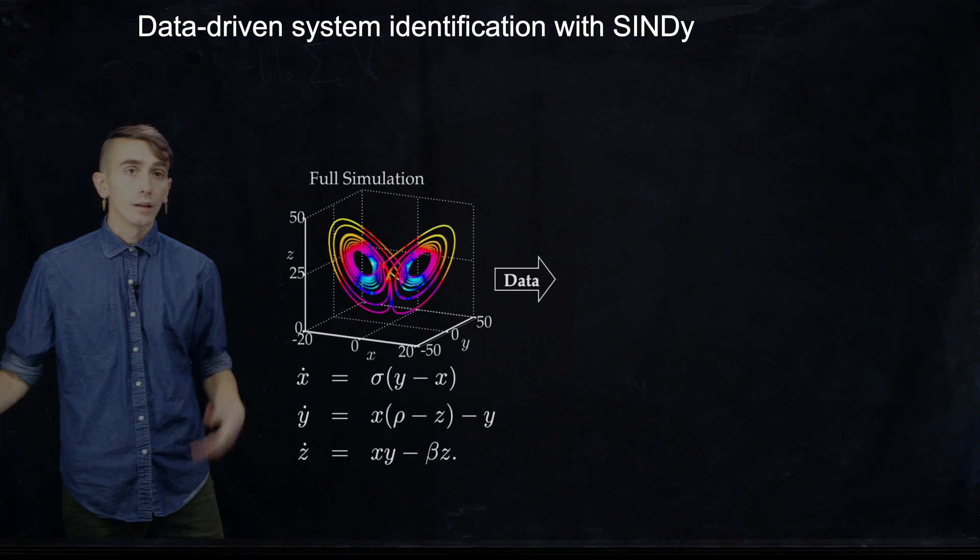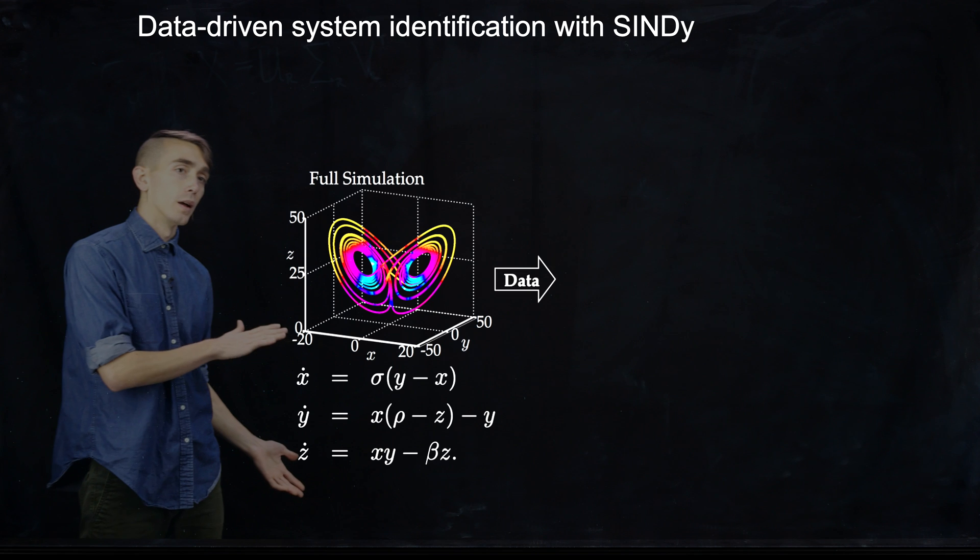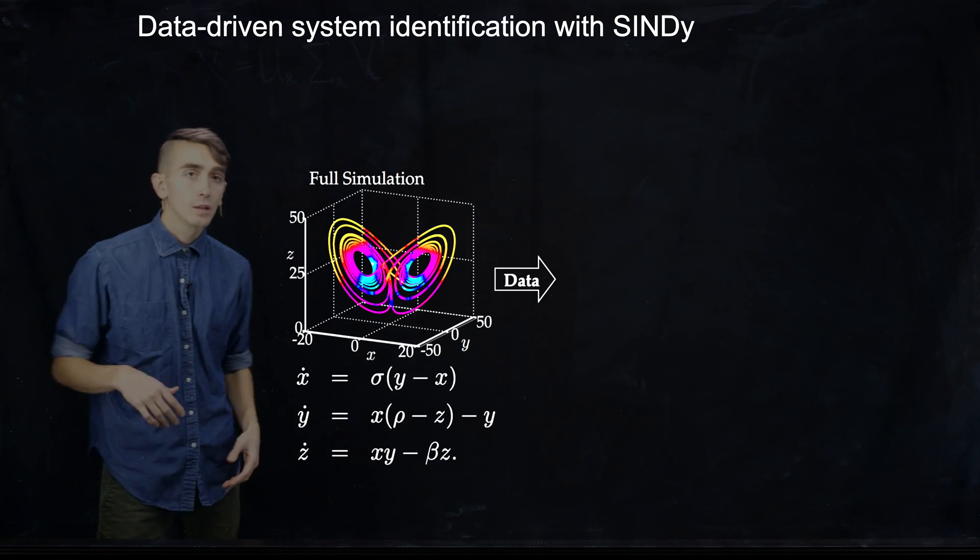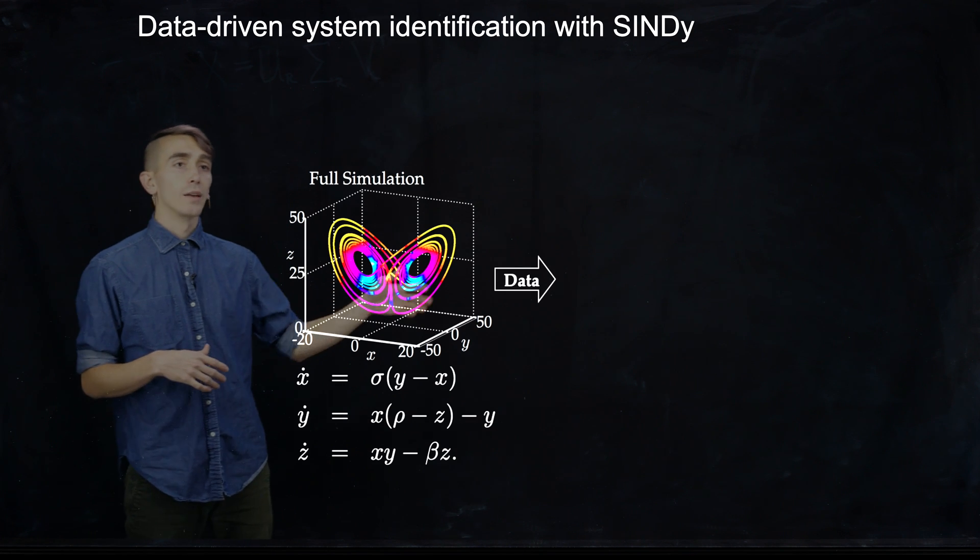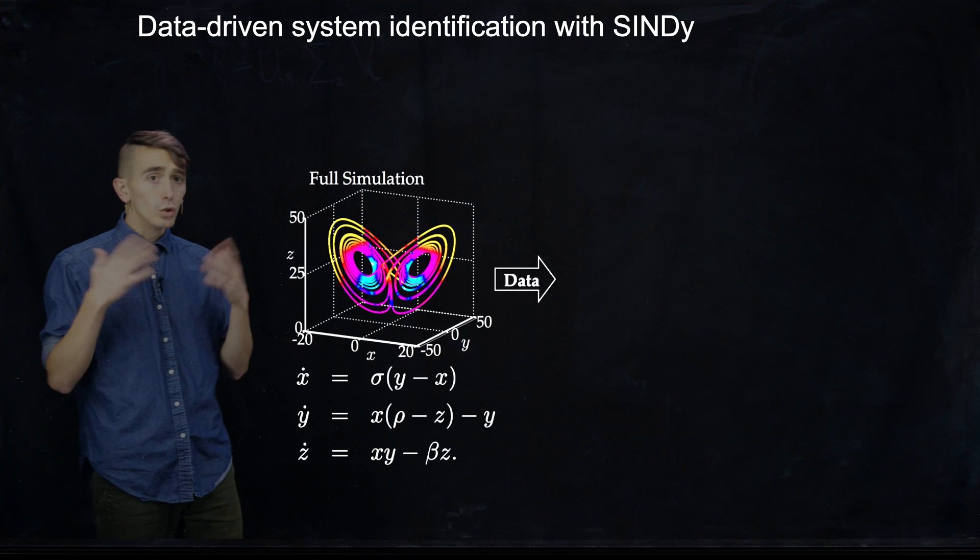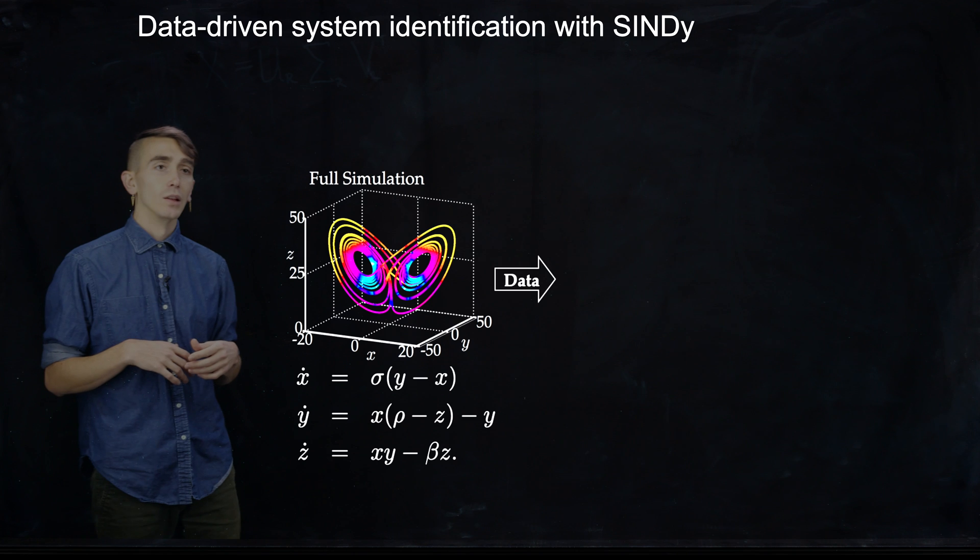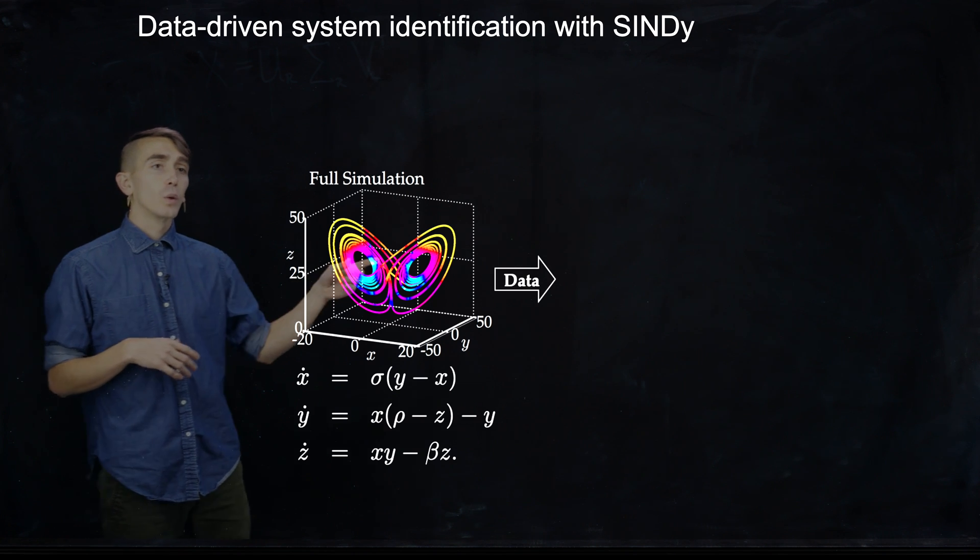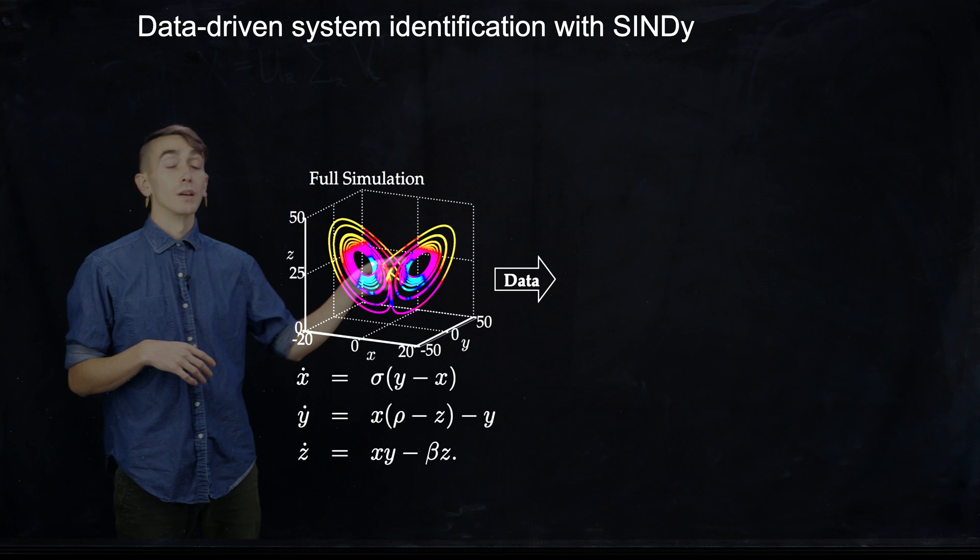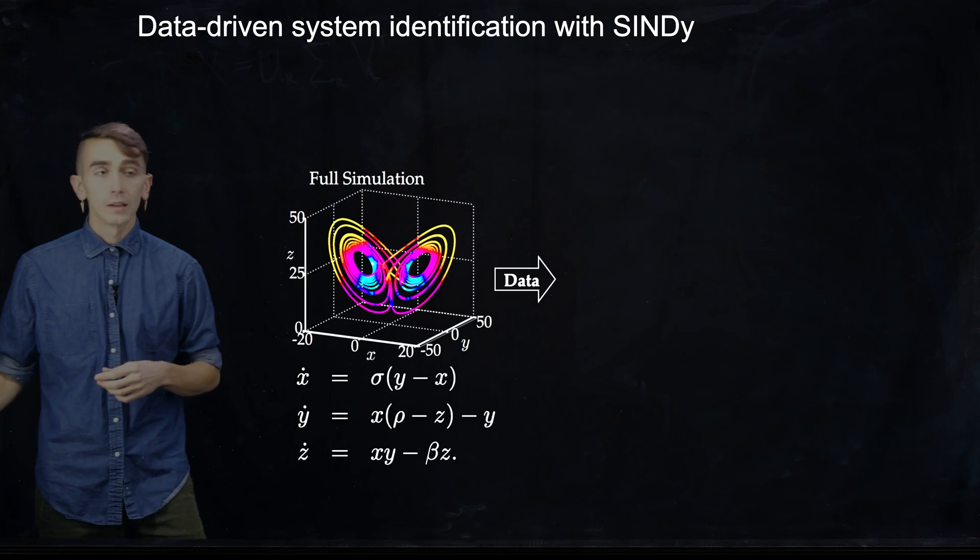And the canonical system we usually use to show this is the Lorenz system here. So it evolves according to these underlying governing equations. But let's imagine you just have some simulation or experimental data. We can imagine for a second that we don't know the underlying equations, even though this is the Lorenz system. And then what we just imagine is we take some data, i.e. we take some measurements of x, y, and z, and then we assemble that data into a data matrix.